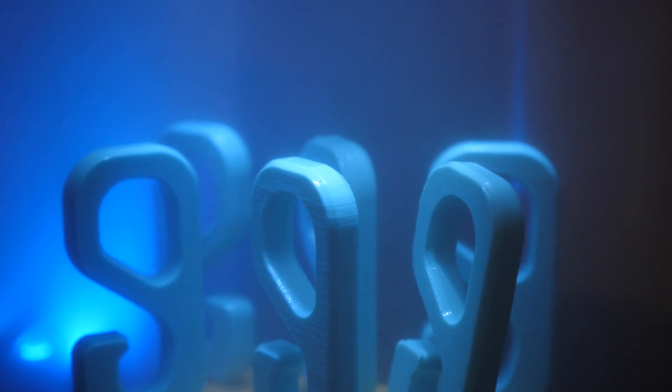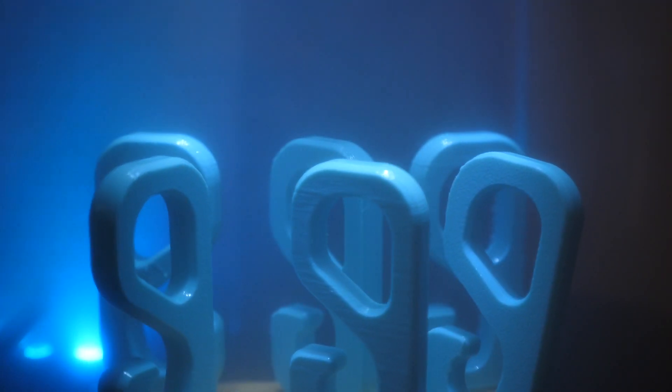Vapor smoothing is a technique where you put your 3D printed parts into a solvent vapor that then dissolves and smooths the outer surfaces of the prints.